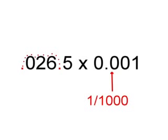The next sum will be 26.5 times by 0.001. This way it will be that 0.001 will be 1 over 1000. So you move the decimal places three places to the left. So the answer will be 0.0265.